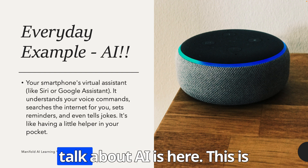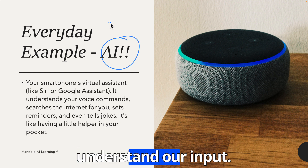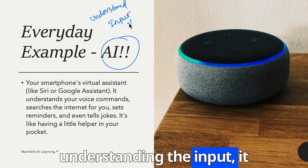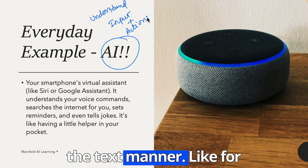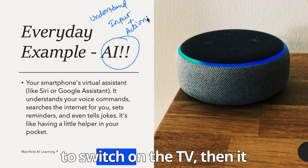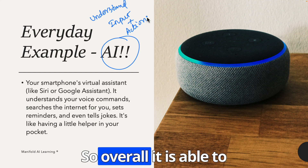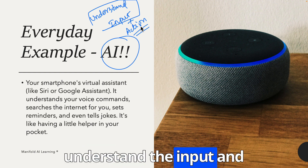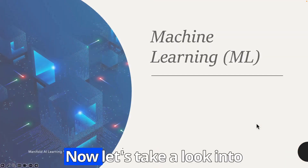The key things to focus on when we talk about AI: it is a system which can understand our input, and along with understanding the input, it also has the capability to take a certain action. This action can be in a programming manner or in a text manner. For example, if I ask Alexa to tell me a joke it responds in text; if I ask it to switch on the TV it calls an API function. An AI is a system which can understand the input and take an action.